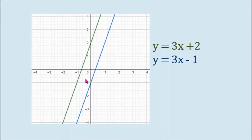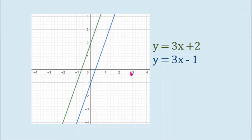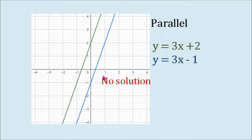Here I also have two lines. The green line has the equation y equals 3x plus 2. Its slope is 3 and its y-intercept is 2. The blue line has the equation y equals 3x minus 1. Its slope is 3 and its y-intercept is negative 1. So this is an example of a system of linear equations in two variables whose lines are parallel. Because the two lines don't meet, there is no intersection, therefore there is no solution.